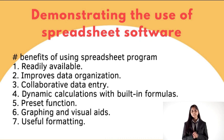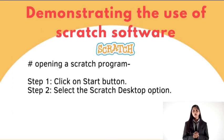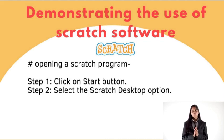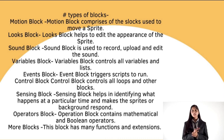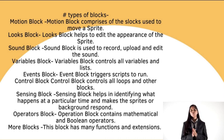Now we will see demonstrating the use of Scratch software. To open Scratch: step one, click on the Start button; step two, select the Scratch Desktop option. The types of blocks in Scratch are: a Motion block, which contains logs used to move a sprite; a Looks block, which helps edit the appearance of the sprite; a Sound block, used to record, upload, and edit sound; and a Variables block, which controls all variables and lists.